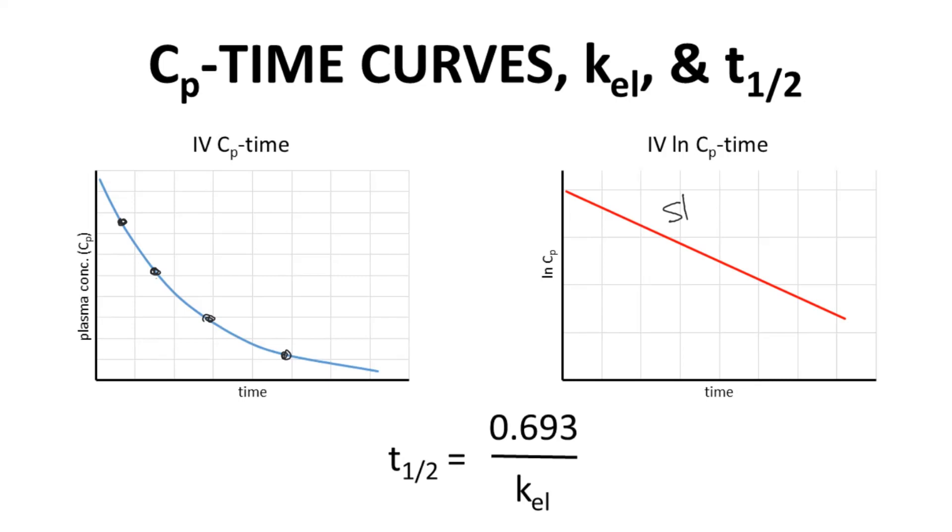The slope of this line is negative KEL, the elimination rate constant. The units of KEL are inverse time. The time axis is normally in hours, so KEL is normally in inverse hours.